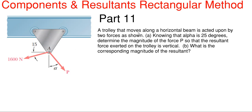So what we have going on here is we have a trolley that moves along a horizontal beam, is acted upon by two forces, as shown, of 1600 newtons down into the left from point A, and this P force, which is down into the right at angle alpha off the vertical. So this says for part A, knowing that alpha is 25 degrees here, determine the magnitude of this P force so that the resultant force exerted on the trolley is vertical. So that's our first part.